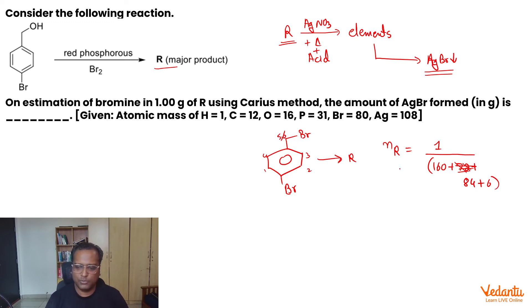So this gives you the number of moles of R. Number of moles of R will also be equal to number of moles of AgBr, right? He is asking the amount of AgBr. So weight of AgBr will be equal to what? Will be equal to its molecular weight. That's 108 into 80.